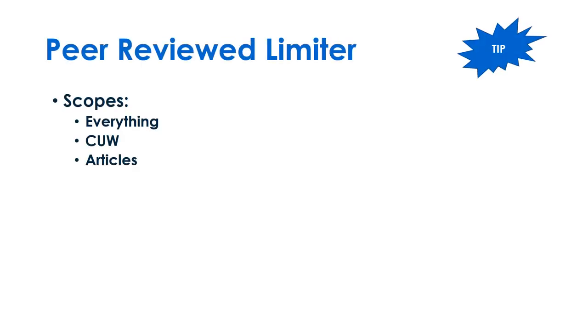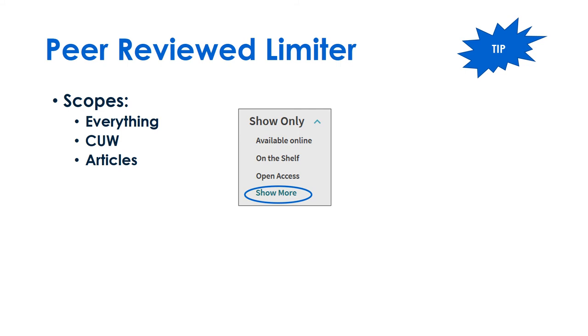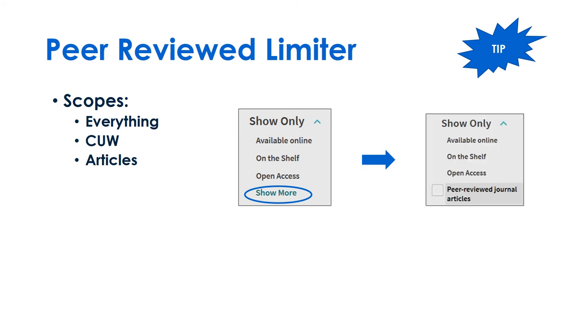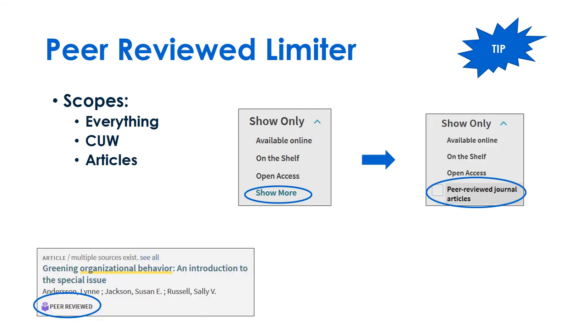Finally, to find peer-reviewed articles, find the limiter under the Show Only section, or look for the purple peer-reviewed labels in the search results.